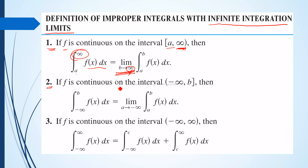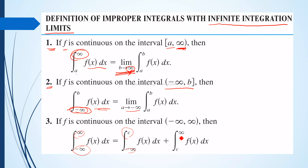The second definition: if the function is continuous on the interval from negative infinity to b, then the integral of f(x) dx from negative infinity to b is equal to the limit of the integral of f(x) dx from a to b, as a approaches negative infinity — the lower limit approaches negative infinity. The third type is when both upper and lower limits approach infinity; this equals the integral of f(x) dx from negative infinity to c, plus the integral of f(x) dx from c to positive infinity.